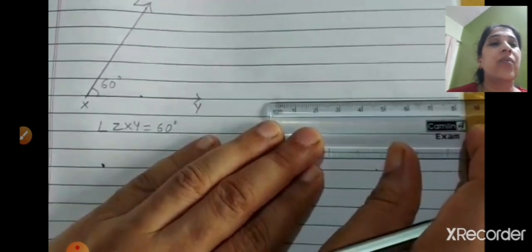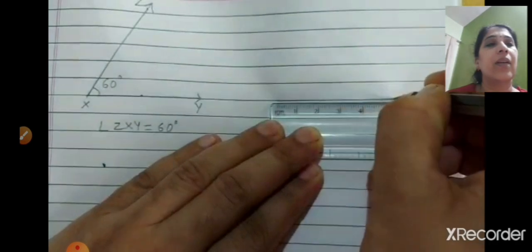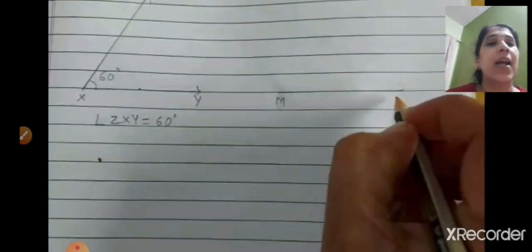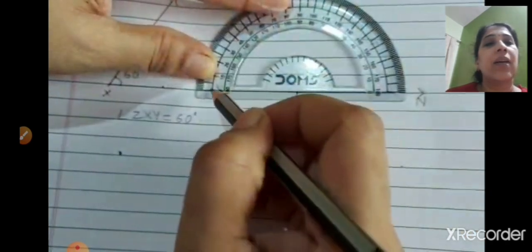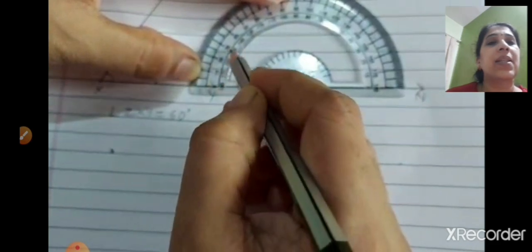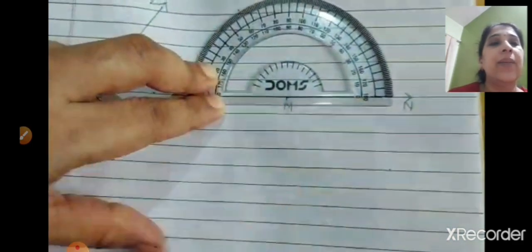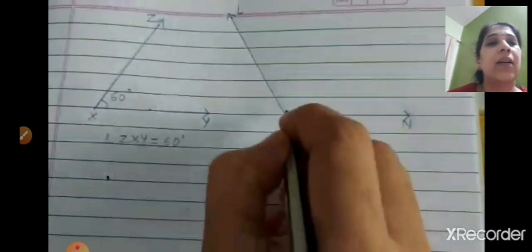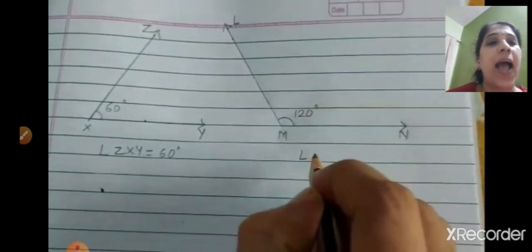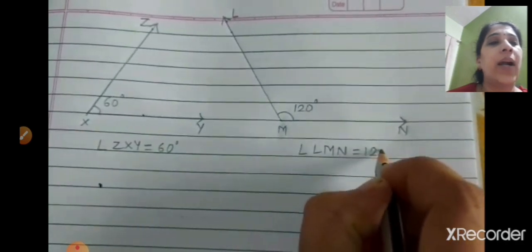Second angle is 120 degrees. Draw a straight line and mark two points as M and N. Keep the center of the protractor on point M. From the left side, count 180, 170, 160, 150, 140, 130, 120 — mark a point at 120. Join both lines and label the third point L. Near M write 120 degrees, so angle LMN = 120 degrees.